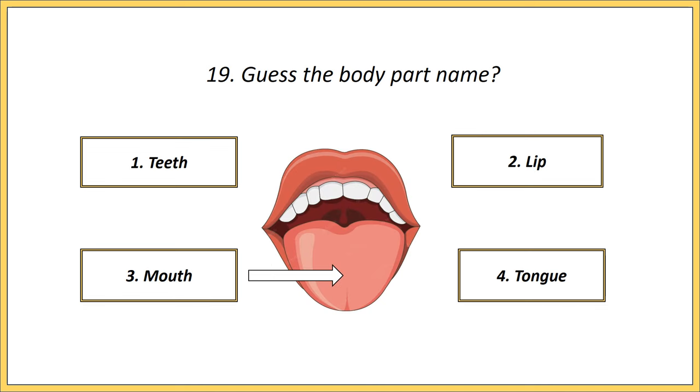Nineteenth one. Guess the body part name. Options: teeth, lip, mouth, tongue. Answer is tongue.